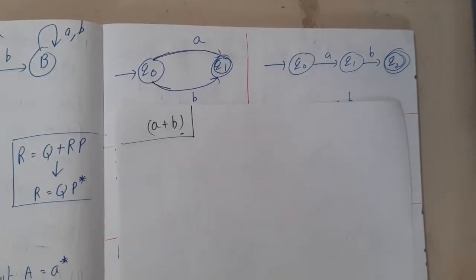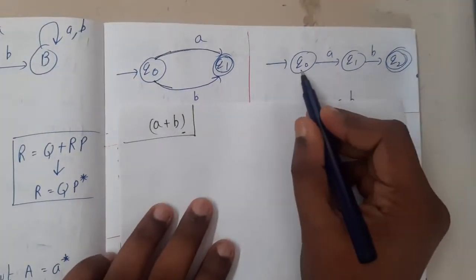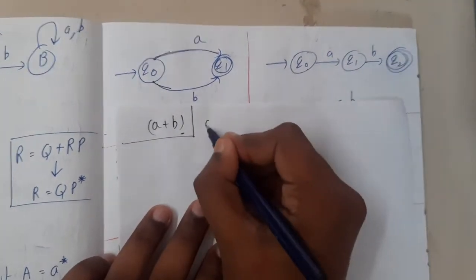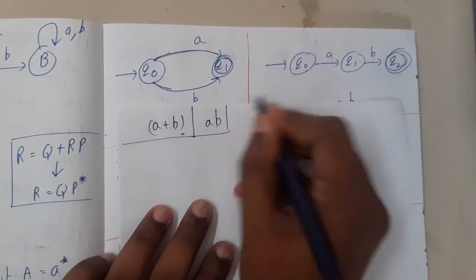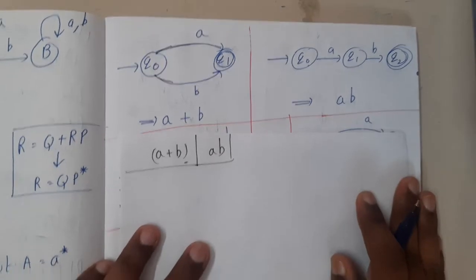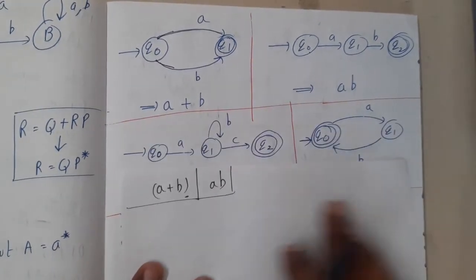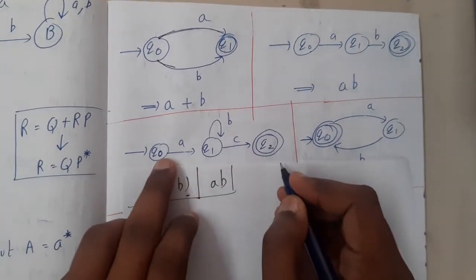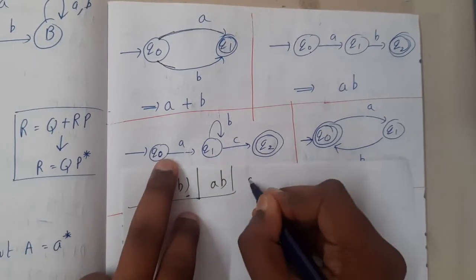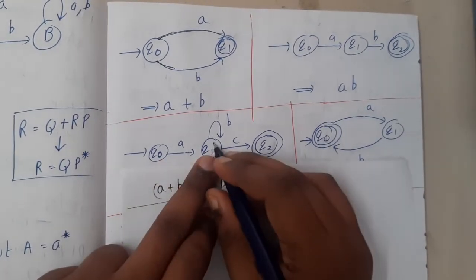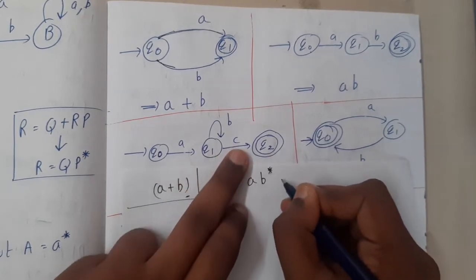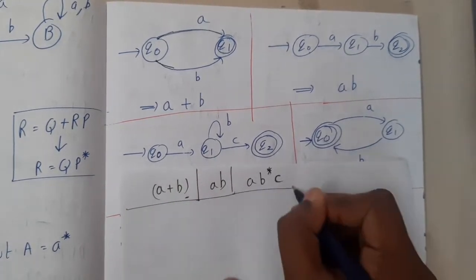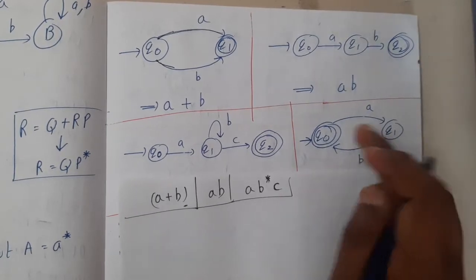First example: from q0 to q1, I can go in two ways, so whenever you have multiple options, write it as a+b. In the next one, from q0 I go to q1 with 'a', then q1 to q2 with 'b', so everything is mandatory — the answer is simply 'ab'. Moving on: from q0 to q1 I need 'a', then from q1 I can have zero or more 'b's, then a single 'c' — so it is ab*c.